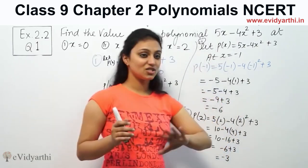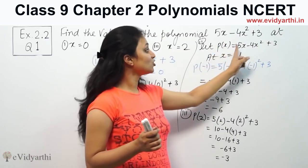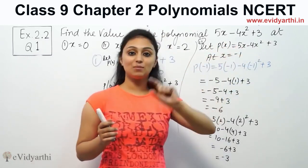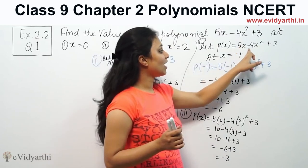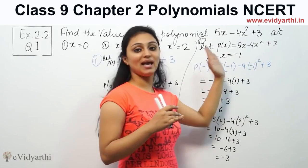So whenever you get a question like this, you just substitute the given value into the polynomial. Whatever variable is given, you substitute that variable. If it's 5y or 4y, substitute y. If it's a, substitute a. If x is given, substitute x.